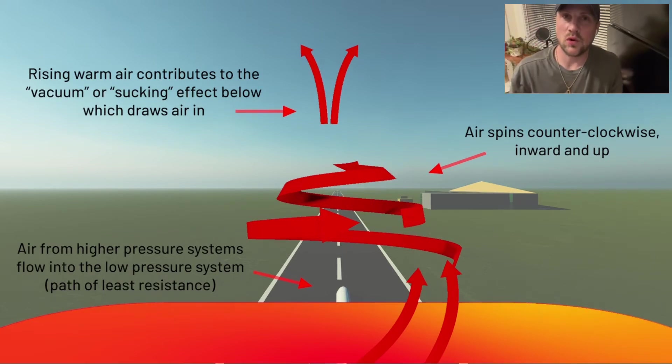Because of the rising warm air, low pressure systems are associated with poor weather for pilots. When the warm air rises, any water vapor in it condenses into clouds. With enough rising effect, these can condense into towering cumulus clouds and even thunderstorms. The rising air also causes turbulence.